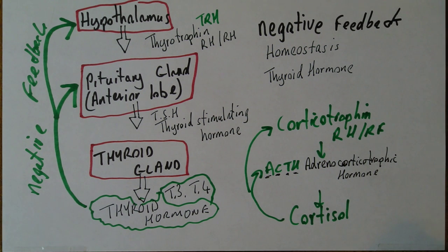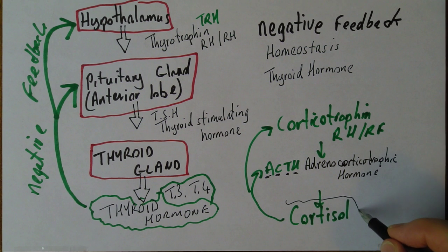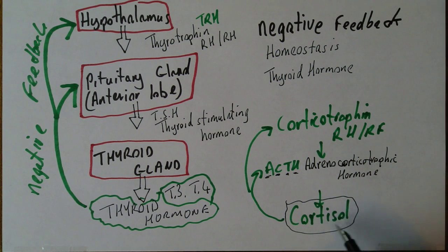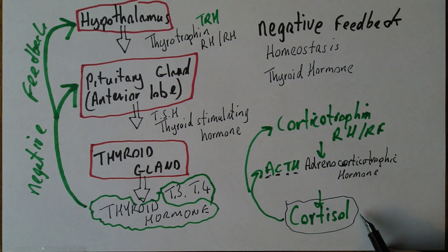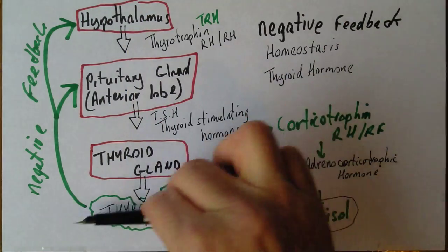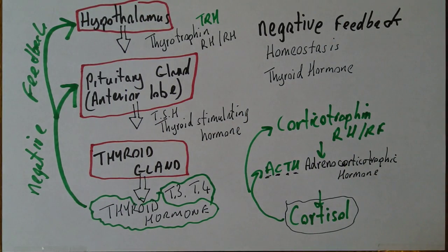For several endocrine products — cortisol and thyroid hormone — the levels in the blood need to be very finely regulated. Too much cortisol is called Cushing's disease, or hypercortisolism, and not enough is Addison's disease. Similarly with thyroid hormone, the regulation is so critical that we have diseases such as thyrotoxicosis or hypothyroidism resulting from increased or decreased amounts.